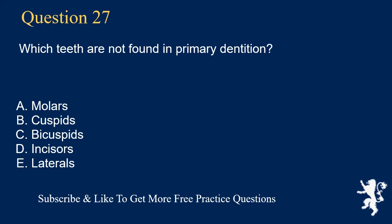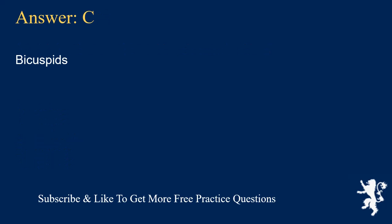Question 27. Which teeth are not found in primary dentition? A. Molars, B. Cuspids, C. Bicuspids, D. Incisors, E. Laterals. Answer: C. Bicuspids.